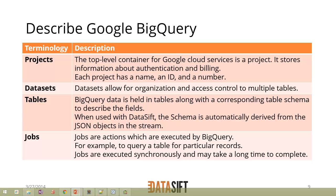The next level, we have data sets. Within a project, we have a Google BigQuery data set, and we can create as many of these data sets as we want, and then we can reference a data set as a destination in the DataSift platform. Within the data set, you can have multiple tables. The BigQuery data itself is held in tables, and there is a table schema which defines the different output fields from the interactions that match your filter. That schema is automatically derived from the JSON objects in the stream of interactions, so we only have to create the data set and the DataSift platform will create the tables for us.